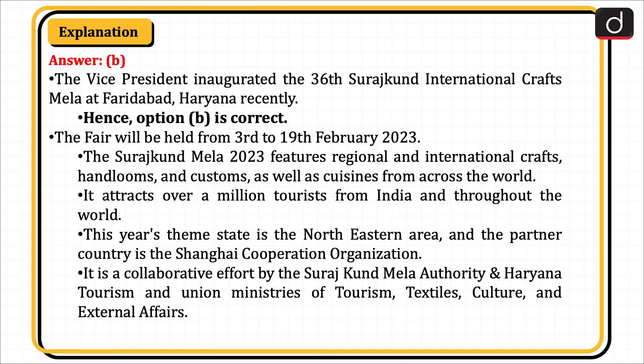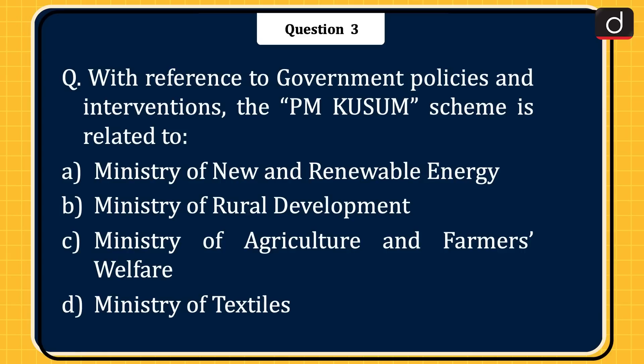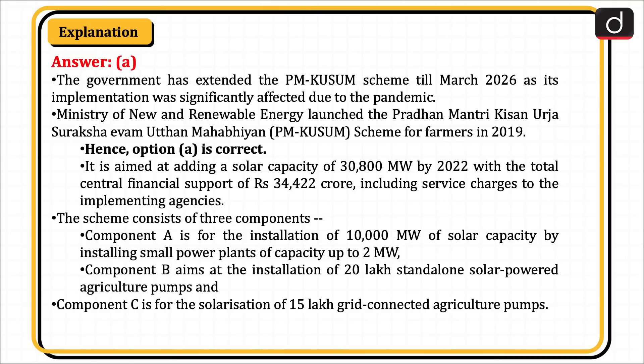Next question: with reference to government policies and interventions, the PM-Kusum scheme is related to which ministry? Options: Ministry of New and Renewable Energy, Ministry of Rural Development, Ministry of Agriculture and Farmers Welfare, or Ministry of Textiles? The correct answer is option A, Ministry of New and Renewable Energy. The government has extended the PM-Kusum scheme till March 2026 as its implementation was significantly affected due to the pandemic. Ministry of New and Renewable Energy launched the Pradhan Mantri Kisan Urja Suraksha evam Utthan Maha Abhiyan, or PM-Kusum scheme, for farmers in 2019. Hence, option A is correct.